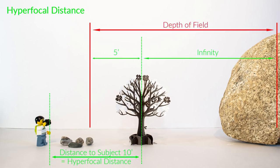This is your maximum depth of field. In this example, the hyperfocal distance is 10 feet and everything from five feet near the rocks out to infinity, which would include the tree and the mountain, would be acceptably sharp when the photographer focuses on the tree at 10 feet. It is at this hyperfocal distance point where you should set your focus to get everything in your scene acceptably sharp from the foreground elements to the background elements.